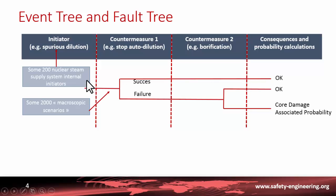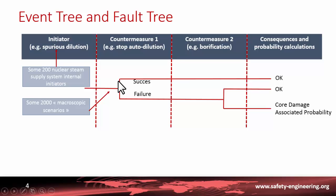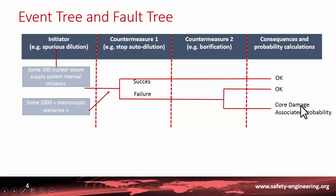This is how the event tree is built, starting from an initiating event. There are a very large number of initiators considered in a complete PSA, and the probability of occurrence of each initiator is taken from experience. If the first counter-measure is successful, there will be no consequence. If it fails, the second counter-measure will intervene. If that succeeds, there will be no consequences, but if it also fails, there will be consequences such as core damage or release of radioactivity.